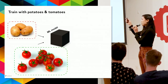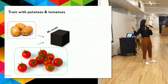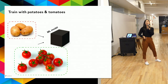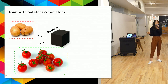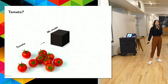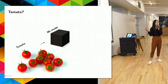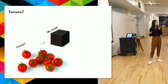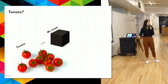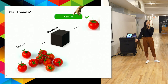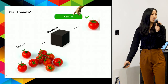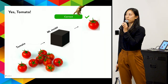We train the model with images of potatoes and tomatoes — what we know are tomatoes and what we know are not tomatoes. Once we feed it enough images, let's see if it has learned what a tomato is. And yes — it knows what a cherry tomato is.